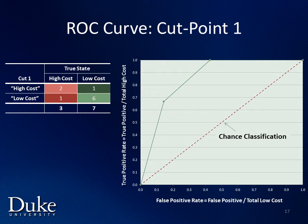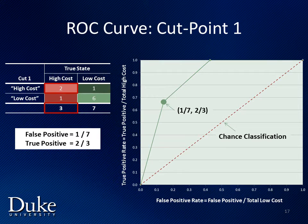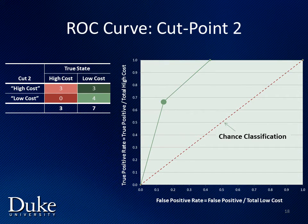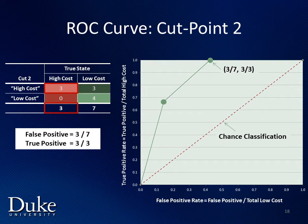Now let's plot the data for our first cut point. The x-coordinate is our false positive rate, or 1 over 7, and the y-coordinate is our true positive rate, or 2 over 3. Similarly, for our second cut point, the x-coordinate, or false positive rate, is now 3 over 7, and the y-coordinate, or true positive rate, is 3 over 3.